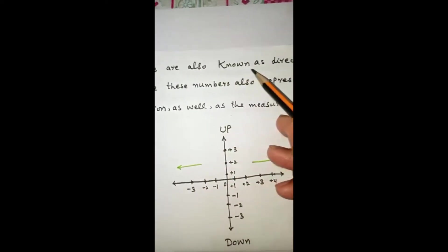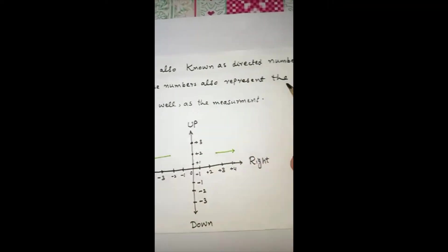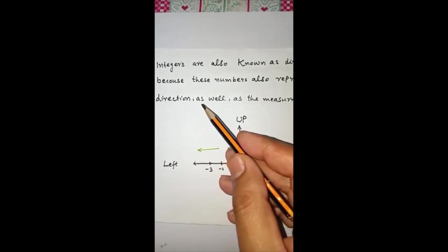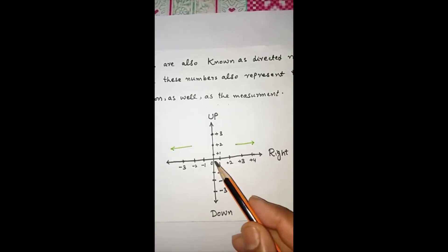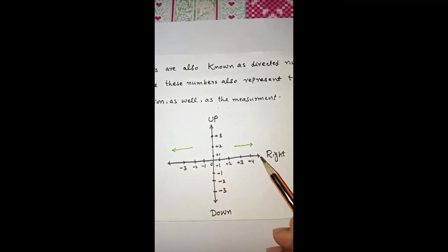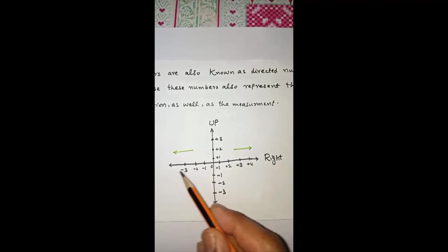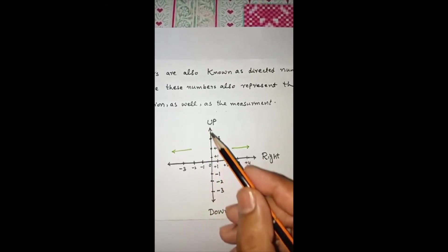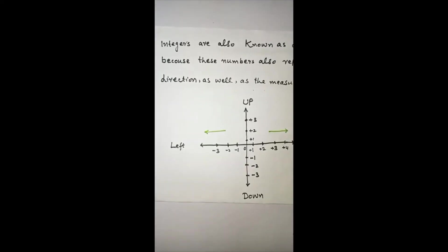Integers are also known as directed numbers because these numbers also represent the direction as well as the measurement. On the right side of zero, numbers gradually increase, and on the left side, numbers gradually decrease. Going up, numbers increase, and going down, numbers decrease. This is why integers are called directed numbers.